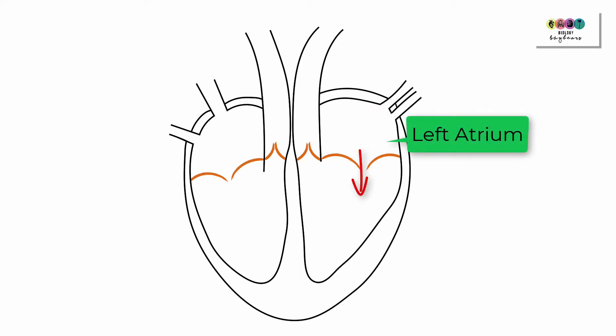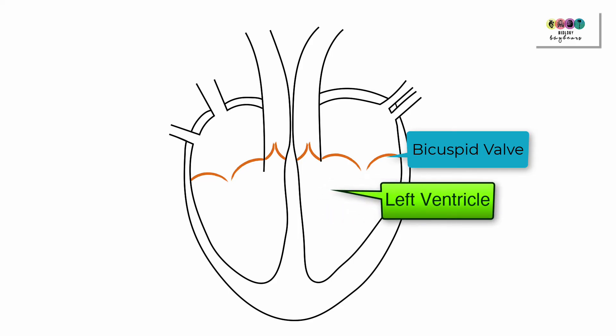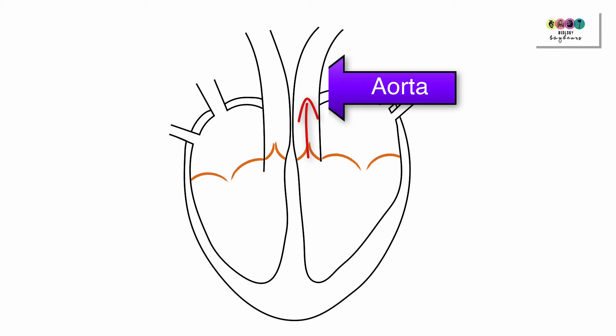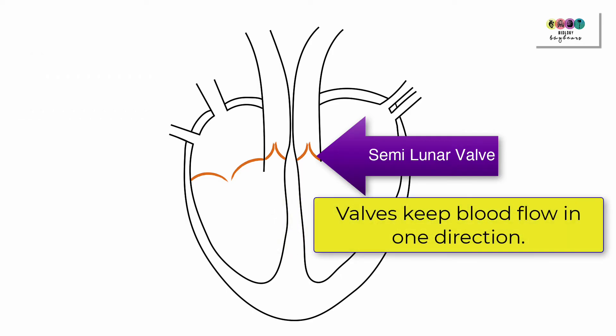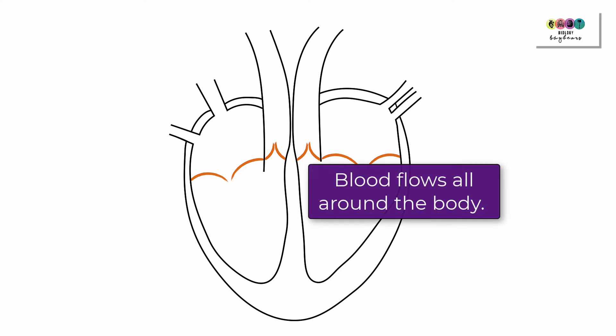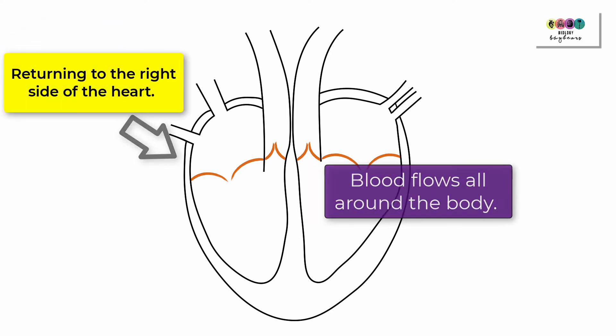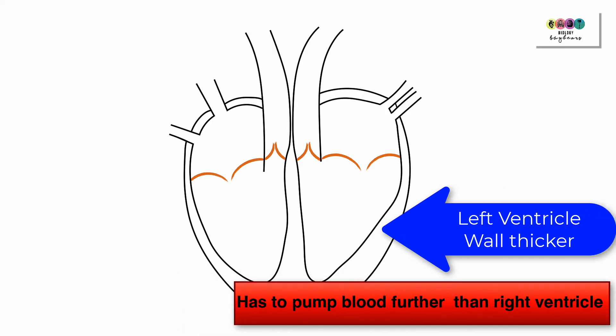It passes through the bicuspid valve into the left ventricle. The left ventricle wall will contract and this forces the blood out of the heart in the aorta. As the blood exited the heart, it passed through a semilunar valve—valves keep the blood flowing in one direction only. So the blood is going to go all around the body and back to the right side of the heart, back to the right atrium. The left ventricle wall is thicker than the right because it has to pump the blood further.